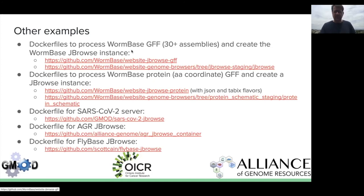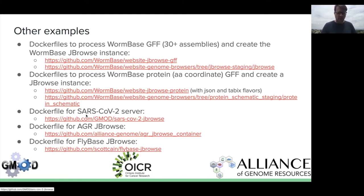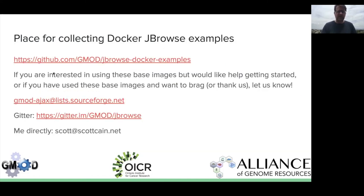The link for that Dockerfile is here. There are several other examples I don't have much time to cover. WormBase has two different JBrowse instances — one using 30-plus assemblies — with Docker containers that process GFF into nclist and one that creates a server. Same thing for WormBase protein GFF that makes amino acid coordinate JBrowses. There are also Dockerfiles for a SARS-CoV-2 server running at covid.jbrowse.org, one for the AGR JBrowse server, and a demo for the FlyBase JBrowse server. We also have a place on GitHub for collecting these various examples — if you only walk away with one URL, this GitHub repo is the one.